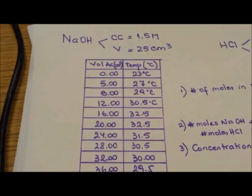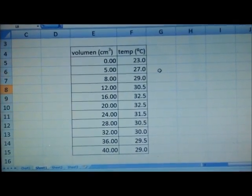That doesn't mean that we have one curve going up and down. But actually, we have two lines that are going to intercept at the maximum temperature. That is the neutralization temperature.